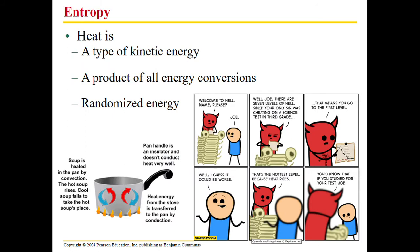Heat is a type of kinetic energy — it's energy in motion, the movement of molecules. As we heat them, they move faster. Any time we have energy conversion, some of that movement will be released as heat. That energy is randomized, which is called entropy — entropy is that randomized energy.